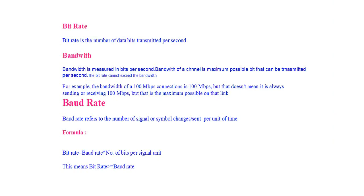Now what is bit rate? Bit rate is the number of data bits transmitted per second. So the number of bits transmitted per second is called bit rate, measured in bits per second.